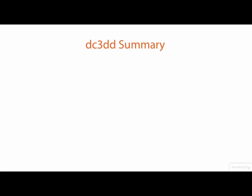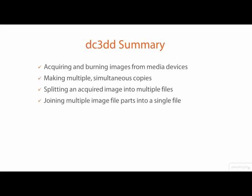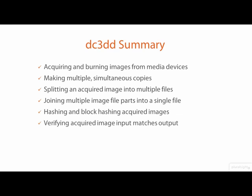In this demo, we saw how to acquire and burn images using DC3DD, how to make multiple copies of a media device, how to have DC3DD split acquired image data into multiple physical files, how to reassemble those multiple parts into a single image file, how to hash entire images including block hashing, verifying that the input and output of DC3DD is identical, and how to create a log file. If you are wondering whether you should use DD, DCFLDD, or DC3DD for your disk imaging, I prefer always using DC3DD. The exception is if I am on a Linux or Unix box that does not have DC3DD installed, then I must fall back to using DD.